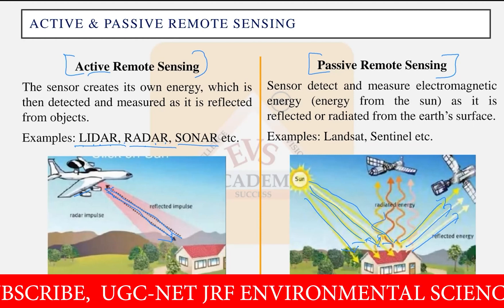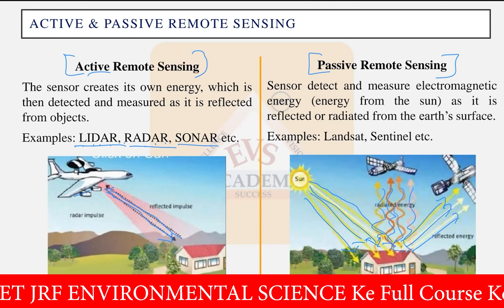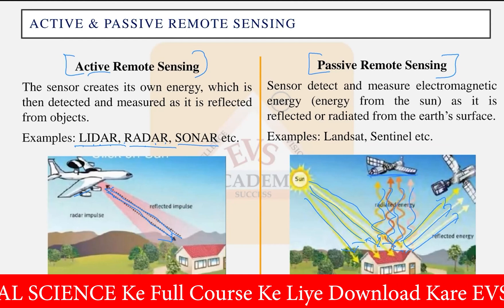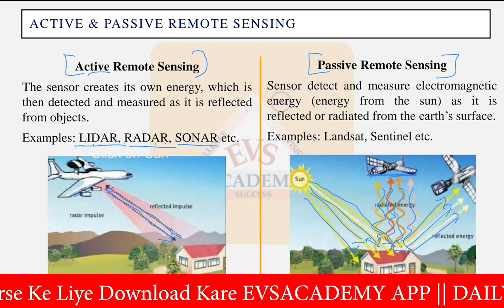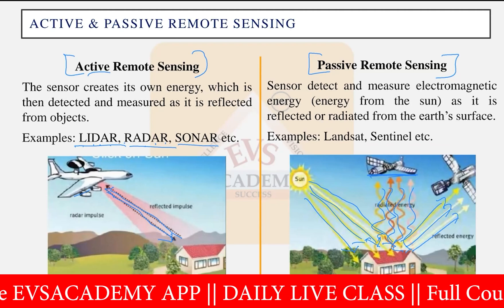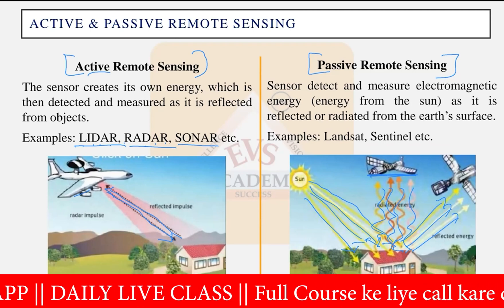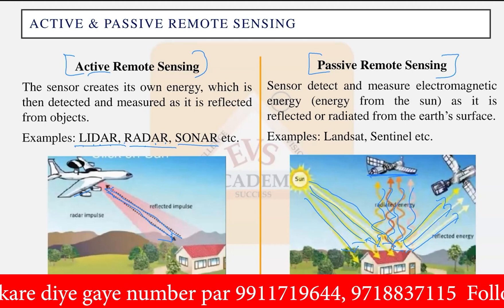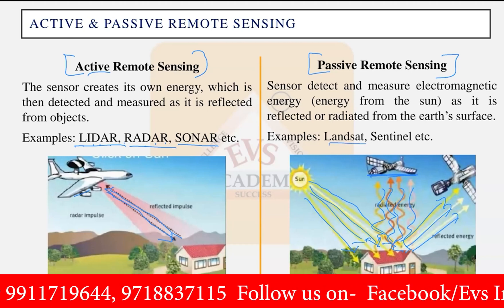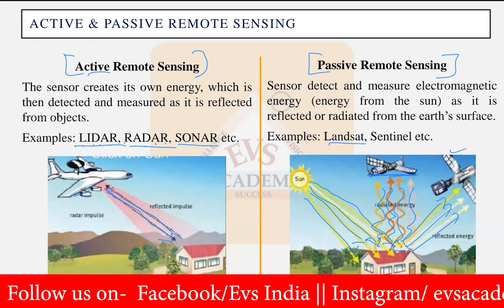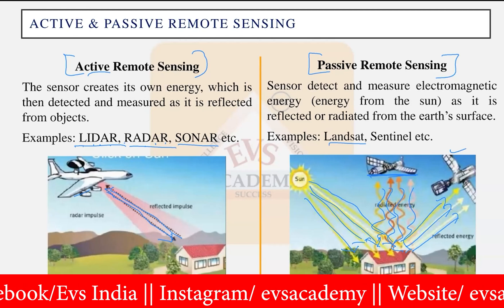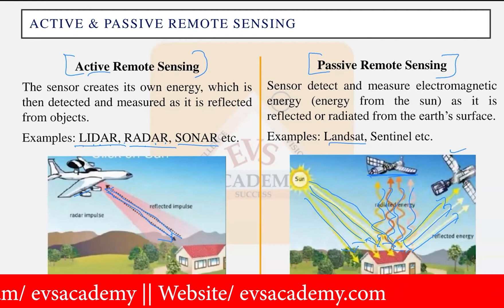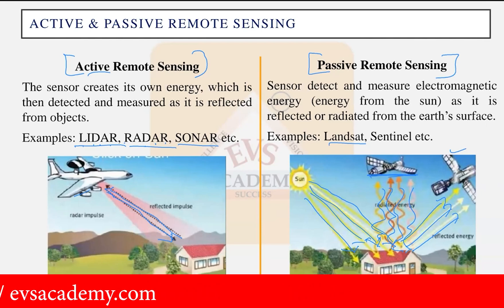Some thermal heat energy also goes out from the atmosphere to space, and that is also detected by certain satellites. Satellites using the sun's energy as the electromagnetic radiation source to detect reflected radiation from objects are all types of passive remote sensing. An example is the Landsat satellite series — from Landsat 1 to Landsat 9 — with Landsat 7, 8, and the recently launched Landsat 9 (2022) being popular. These images are completely free to download for study and research purposes.